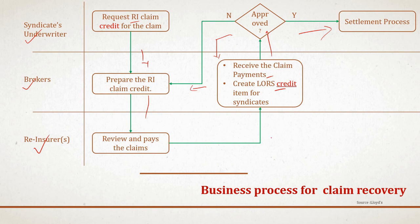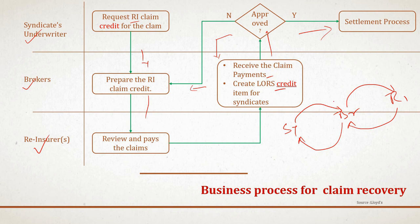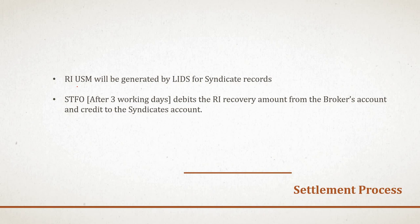In the claims flow: the syndicate pays the cession to the broker and the broker pays the cession to the RI partner. For recovery, the RI pays the recovery to the broker and the broker pays the recovery back to the syndicate — the entire transaction facilitated by the STFO. The broker plays a very important and central role in reinsurance settlement. The RIUSM is generated by LIDs for syndicate record purposes, and after three working days STFO debits the RI recovery amount from the broker account and credits the syndicate account.